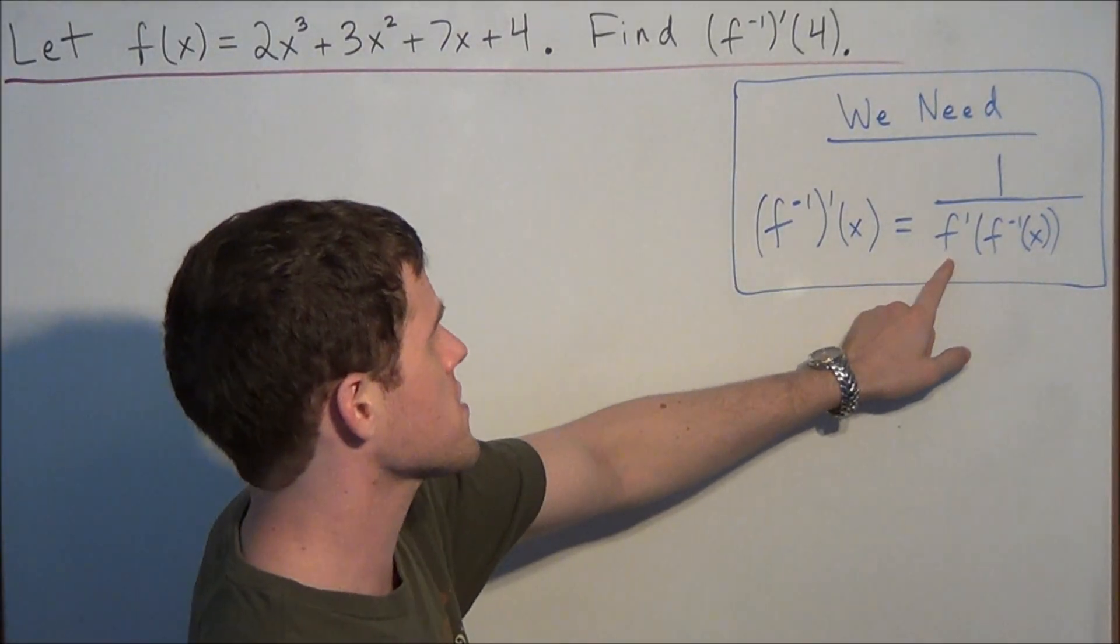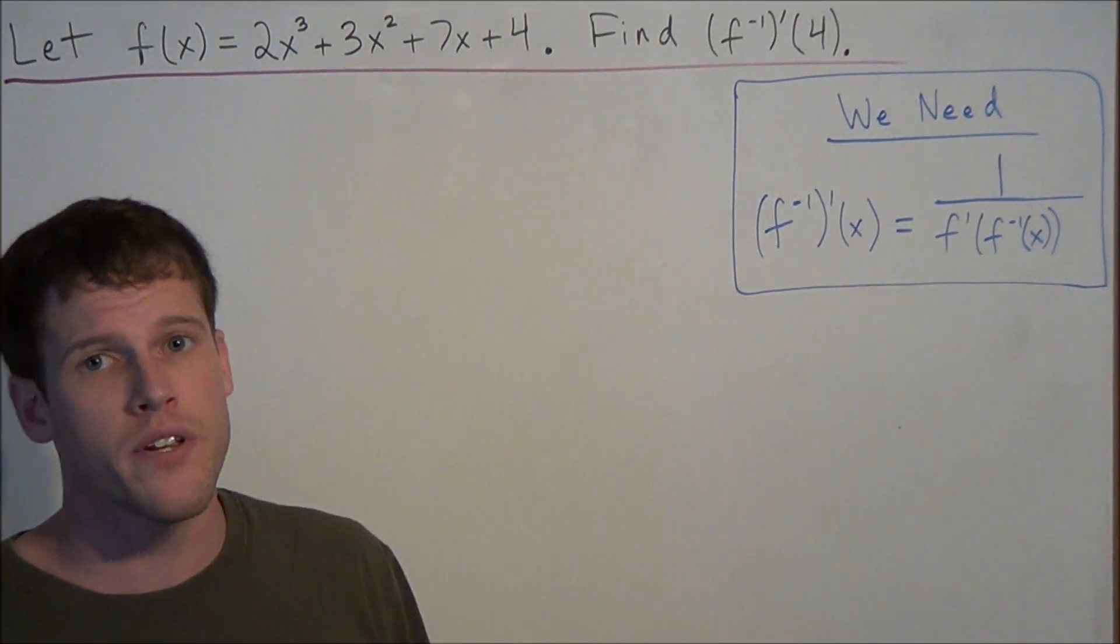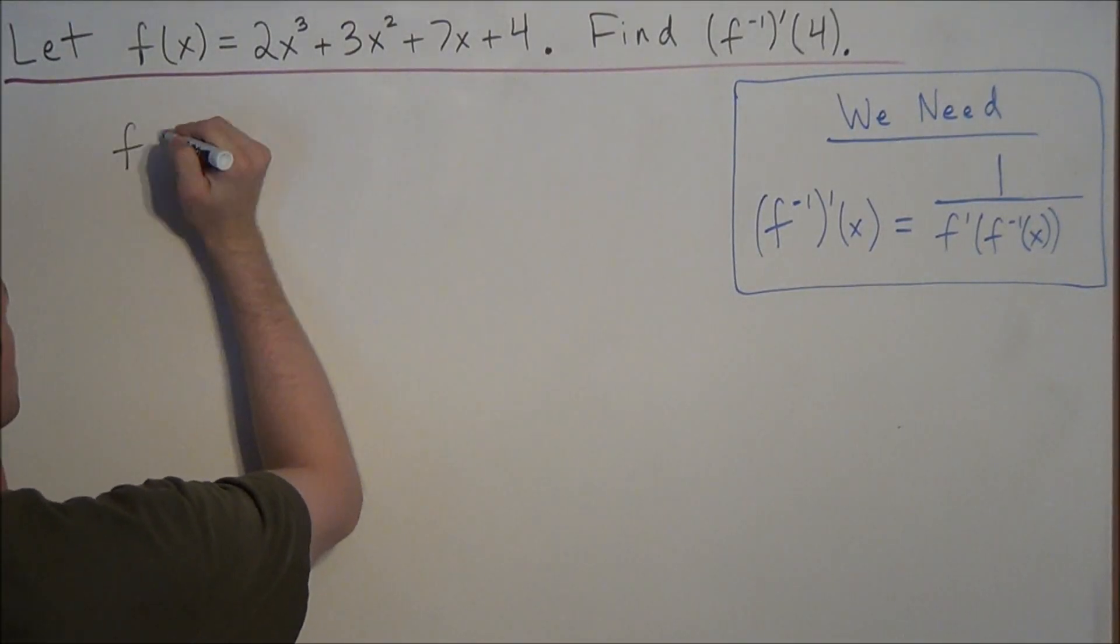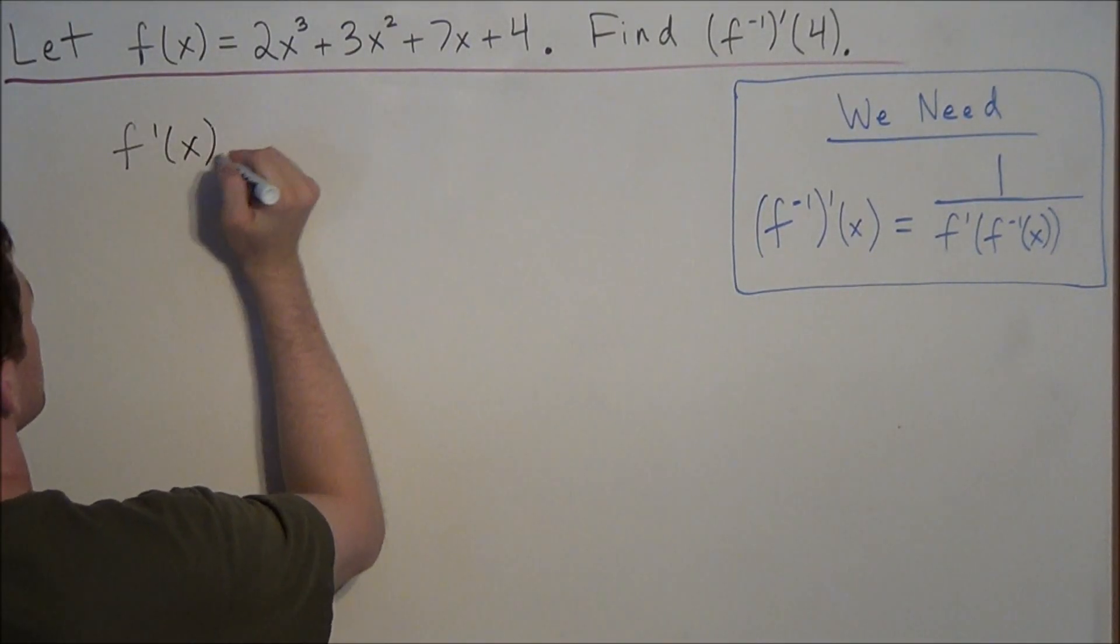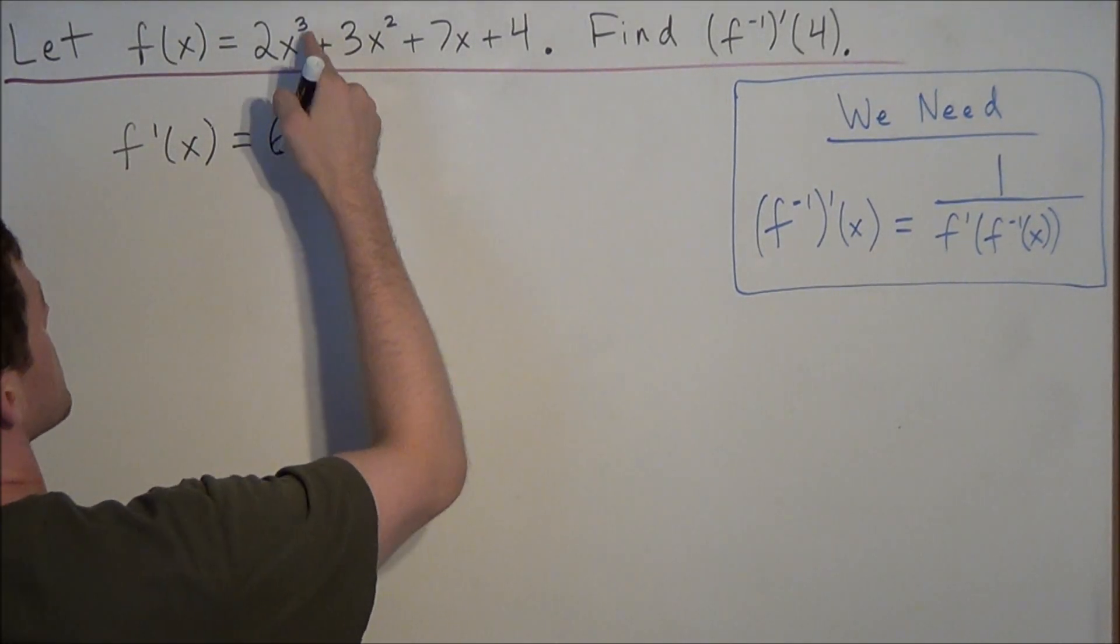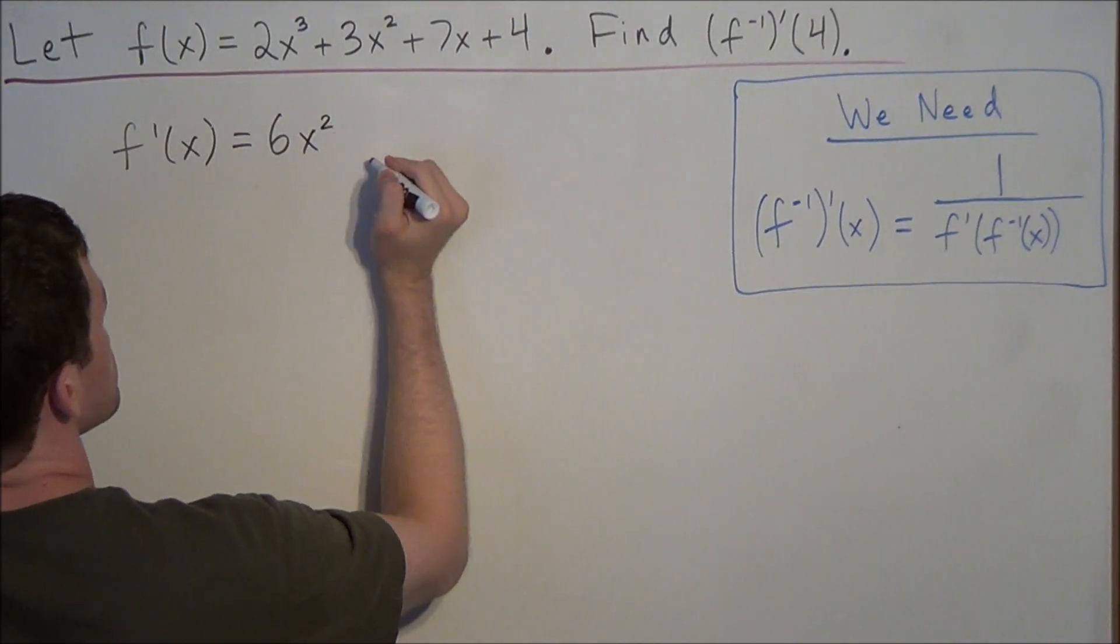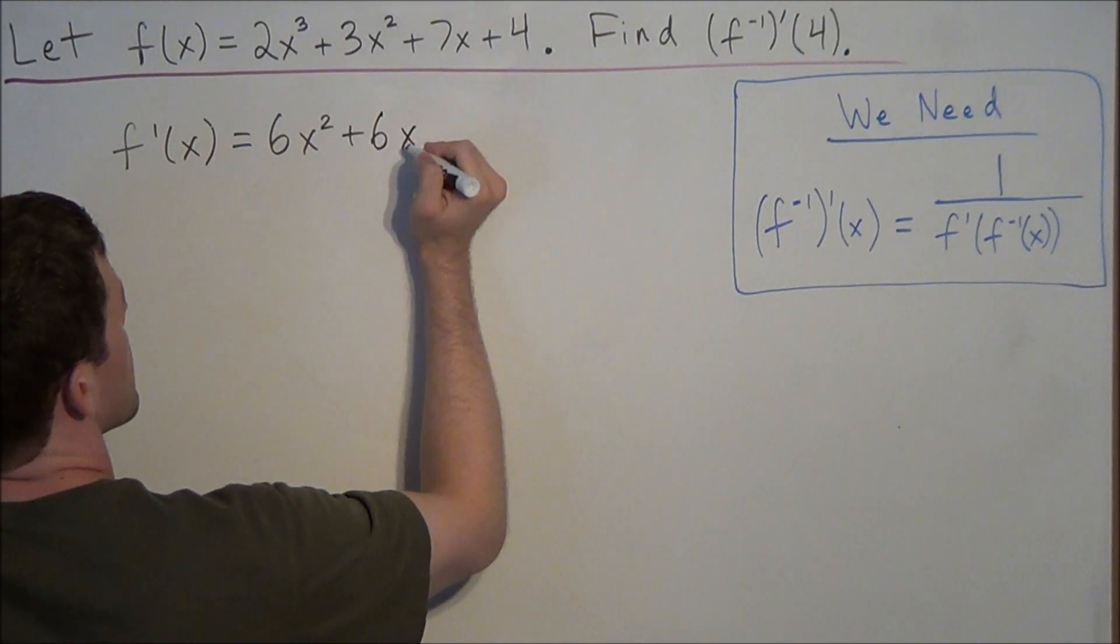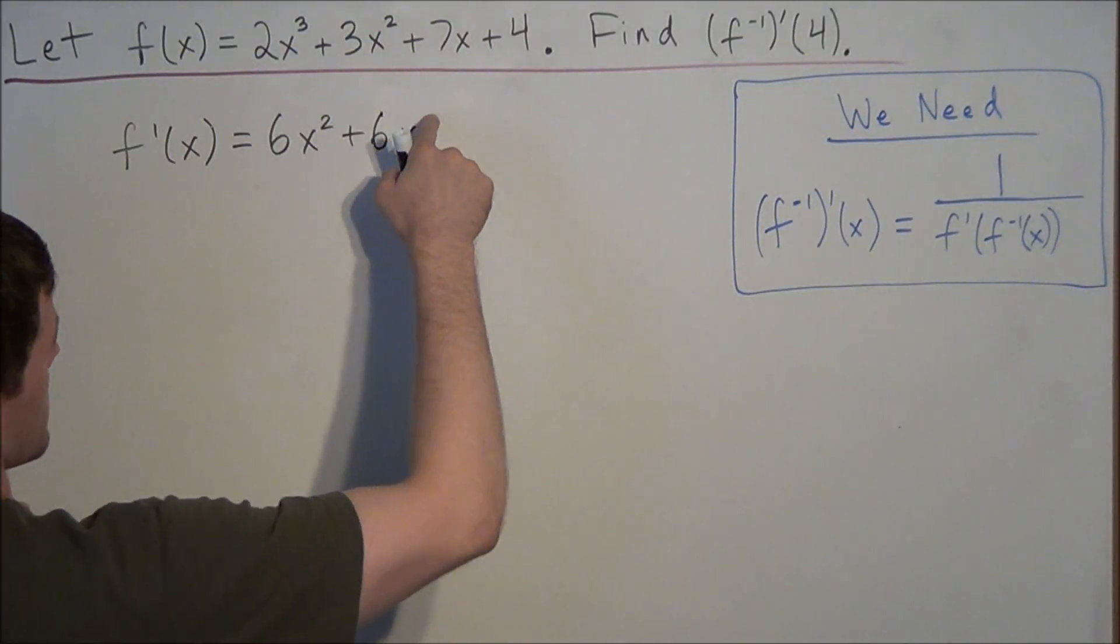The first thing we should find is f prime of x, or the derivative of f. So starting with f of x, f prime of x equals—we have 3 times 2 is 6, x to the 3 minus 1 is 2, plus 2 times 3 is 6, x to the 2 minus 1 is x to the first.